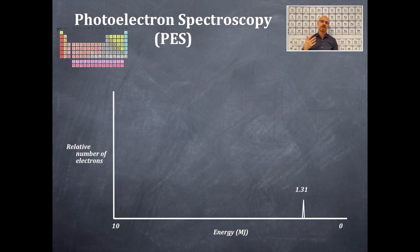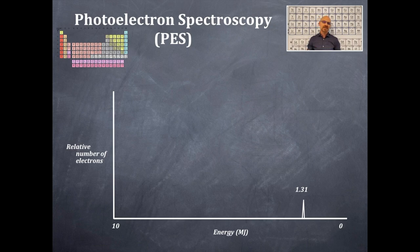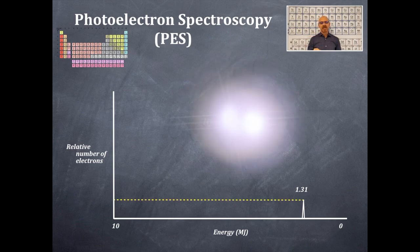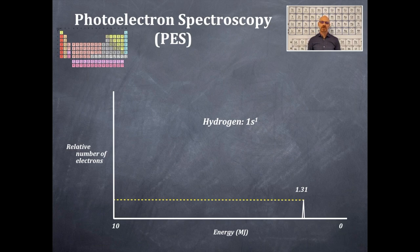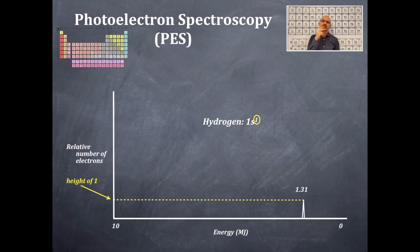Large binding energies indicate stronger attraction to the nucleus, like interior electrons, whereas lower binding energies are seen with outer electrons like valence electrons. This is another application of Coulomb's law — it keeps popping up throughout chemistry. You always need a periodic table when doing a PES diagram. Looking at this first graphic, the y-axis is relative number of electrons and the x-axis is energy in megajoules, going from 10 on the far left to zero on the far right. There's a single peak at 1.31 megajoules, corresponding to hydrogen with its 1s1 electron. The peak height is 1 because there is one electron in that orbital.